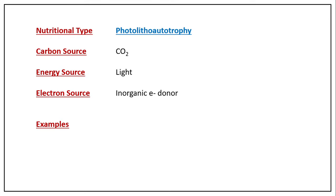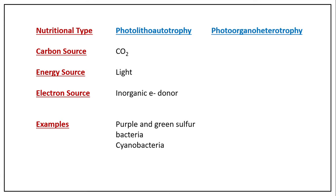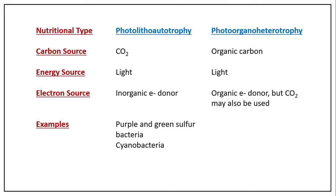Examples of photo-litho-autotrophs include photosynthetic bacteria — mainly purple and green sulfur bacteria — and blue-green algae or cyanobacteria. The second type is photo-organo-heterotrophs. The carbon source is organic compounds since heterotrophs are present; energy source is light; and electron source is organic. Rarely, CO₂ can also be used by these bacteria as an exception.